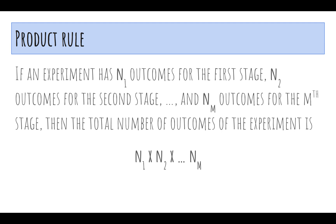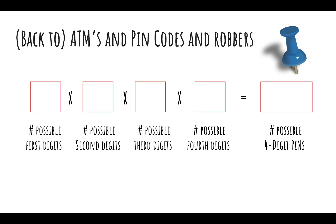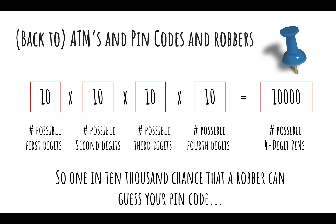The product rule says: if an experiment has N1 outcomes for the first stage, N2 for the second stage, and so on up to the Mth stage, then the number of total outcomes is just the product of all M numbers. Now, how many possible four-digit PINs are there? There are 10 choices for the first digit, 10 for the second, and so on through the third and fourth. The number of possible four-digit PINs is 10 to the fourth, or 10,000. There's a 1 in 10,000 chance that a robber can guess your PIN code, which doesn't make me feel very safe.